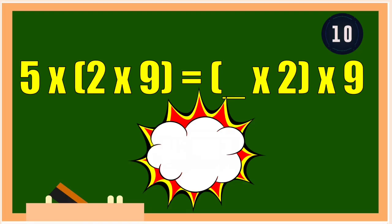2 times the quantity of 3 times 4 is equal to the quantity of 2 times blank times 4. Timer starts now. The correct answer is 5. It is under associative property.